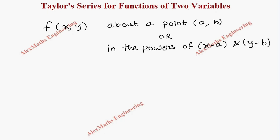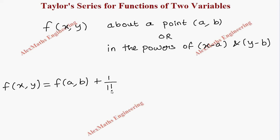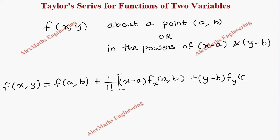We are going to discuss how to write the Taylor series formula. The formula is: f of x comma y is equal to the first term f of a comma b, where the values a and b are substituted for x and y. Then the second term is plus 1 by 1 factorial, open bracket, x minus a into the partial differentiation of the function with respect to x at a comma b, plus y minus b into the partial differentiation with respect to y at a comma b.